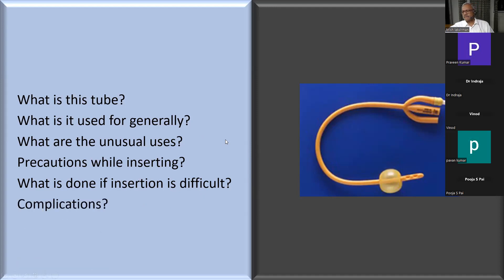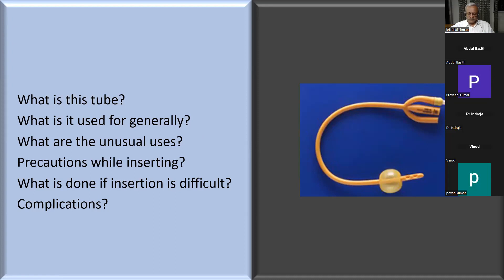Residents should not do urethral dilatation. If they do, it must be under direct supervision of seniors. At night, as a registrar, if you've done a few dilatations with the help of seniors, you can do it, or the consultant must come. Otherwise, do a suprapubic aspiration. In painful acute retention of 500-600 ml, just aspirate it suprapubically. That will carry you through the night and then the urologist can take over in the morning.